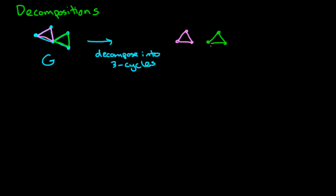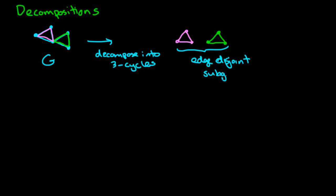The point here is that the edges of my three-cycles don't overlap, so right here I have edge-disjoint subgraphs of my graph G. The fact that they're edge-disjoint means that when I take my graph G, I'm just decomposing the edges of the graph into this family of graphs — in this case, the family of graphs happen to be three-cycles.